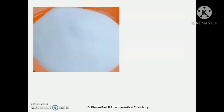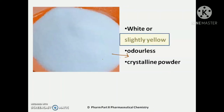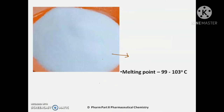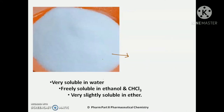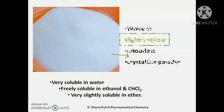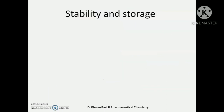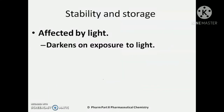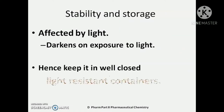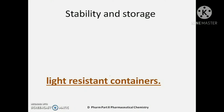Next are the physical properties of Mepyramine. As you can see in the figure, Mepyramine is a colorless, white, or slightly yellow crystalline odorless powder with a melting point of 99 to 103 degrees centigrade. With regard to solubility, it is very soluble in water, freely soluble in alcohol and chloroform, and very slightly soluble in ether. It is affected by light — it darkens on exposure to light — and hence it should be kept in well-closed light-resistant containers.